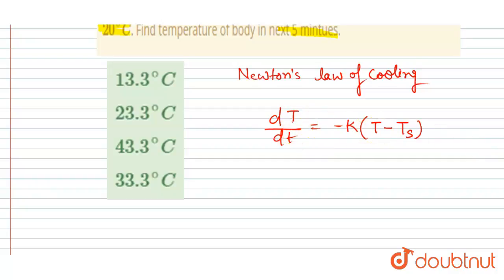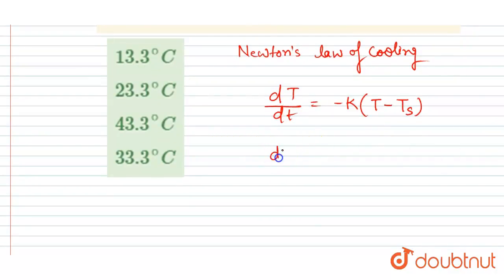So if I write dT/(T - Ts) equals minus K dt.